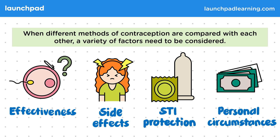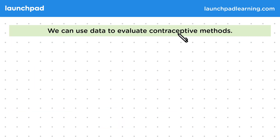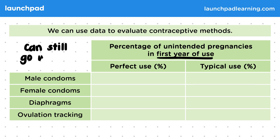So how do we evaluate the effectiveness of different methods of contraception? We can use data to evaluate contraceptive methods. For example, we can look at the percentage of unintended pregnancies in the first year of use for a variety of non-hormonal methods of contraception. Unintended pregnancies mean accidental pregnancies. This perfect use column refers to when people use the contraception perfectly as stated. However, even when users follow all instructions perfectly, things can still go wrong.